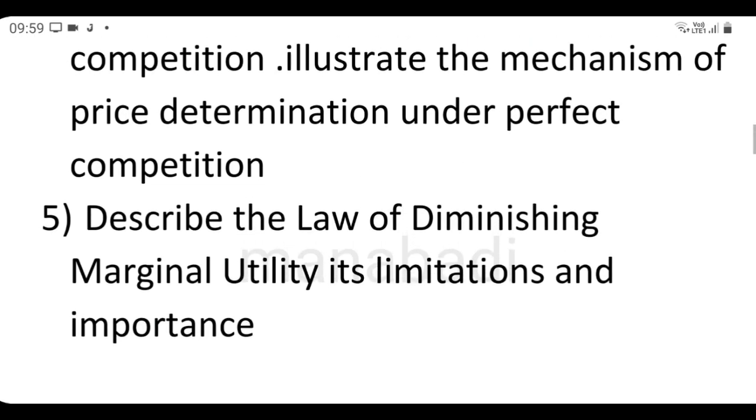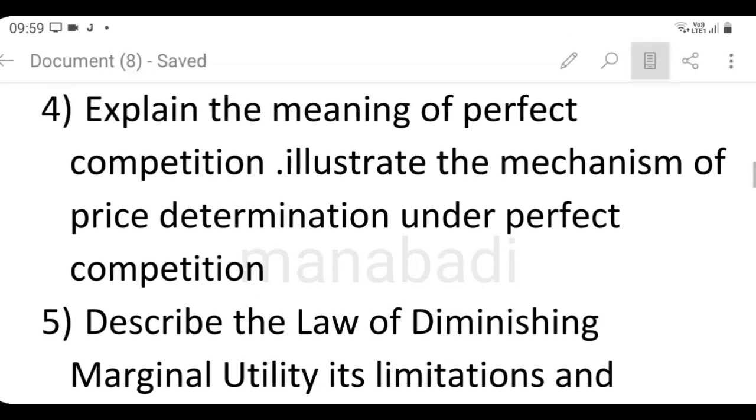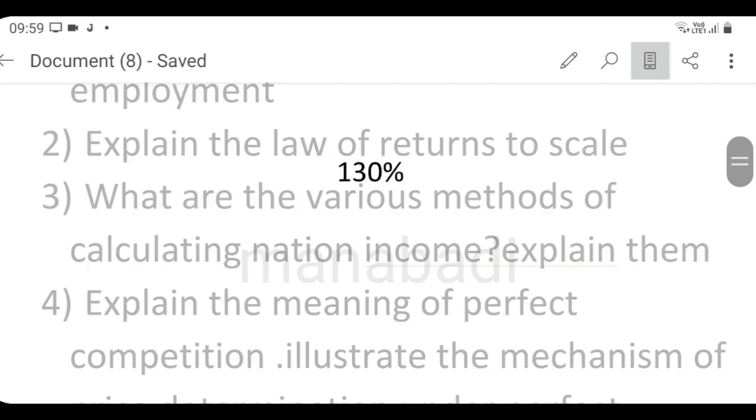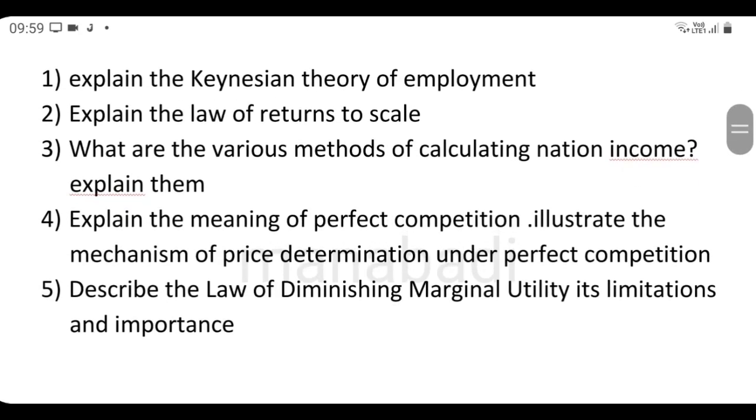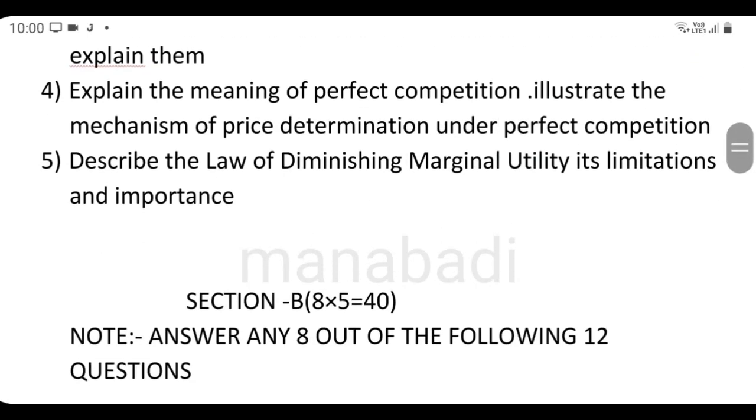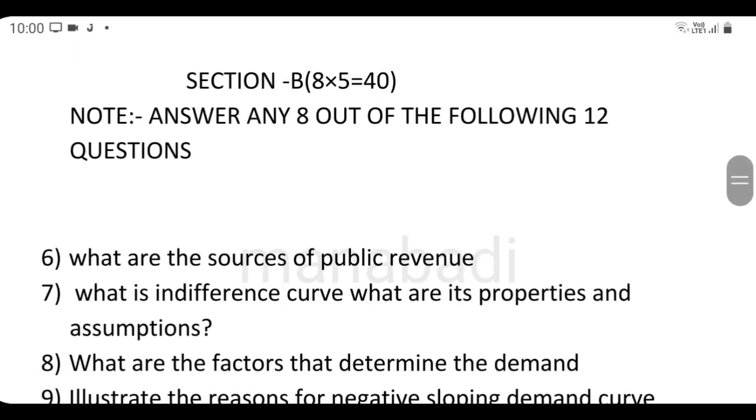Next, describe the law of diminishing marginal utility, its limitation and importance. So DMU, then limitations, we need to get the utility. Then reasons, assumptions, the law and limitations. This is the answer. If you have any questions, I will give you a description in the comment section.